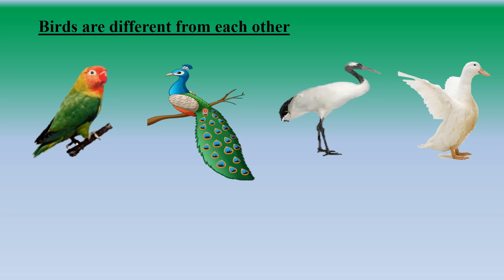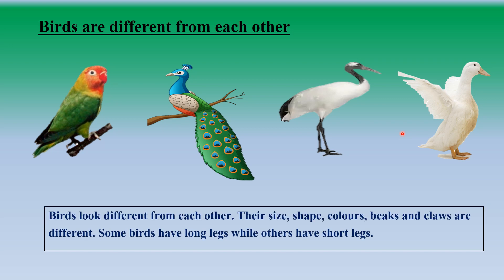What about this crane? It has long legs and its beak is also different. See this duck — it has webbed feet and a broad, flat beak. Like this, birds are different from each other.